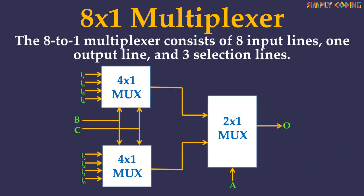The 8-to-1 multiplexer can also be implemented by a combination of two 4-to-1 multiplexers and one 2-to-1 multiplexer. Here 2 selection lines B and C are applied to both 4-to-1 multiplexers. The data input of the upper 4-to-1 multiplexer is I4 to I7, and the data input of the lower 4-to-1 multiplexer is I0 to I3. Therefore each 4-to-1 multiplexer produces an output based upon the values of selection lines B and C. The output of the first stage 4-to-1 multiplexers is applied as input to the 2-to-1 multiplexer in the second stage. The other selection line A is applied to the 2-to-1 multiplexer. If A is 0, then the output will be one of the 4 inputs I0 to I3 based upon the value of selection lines B and C.